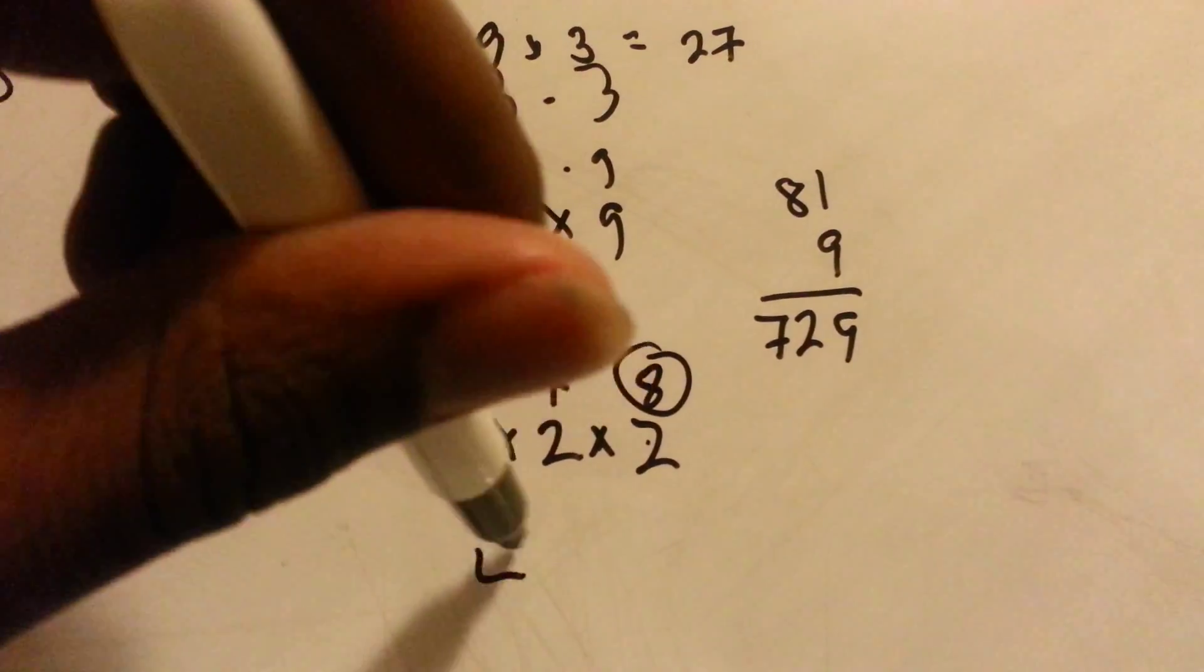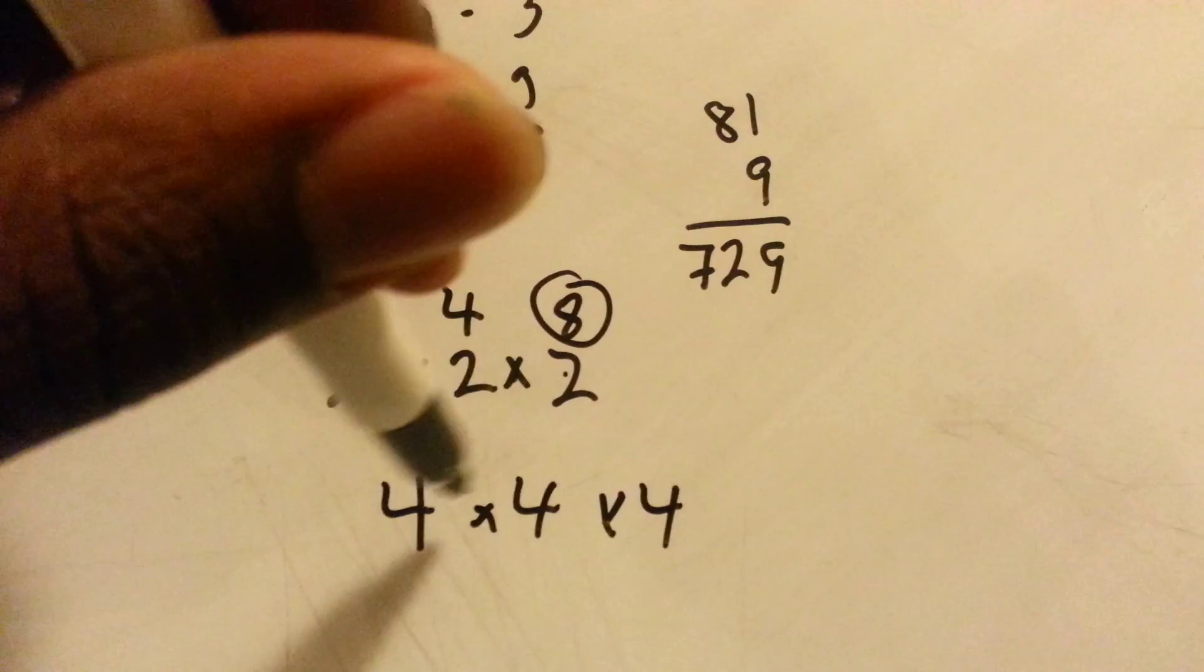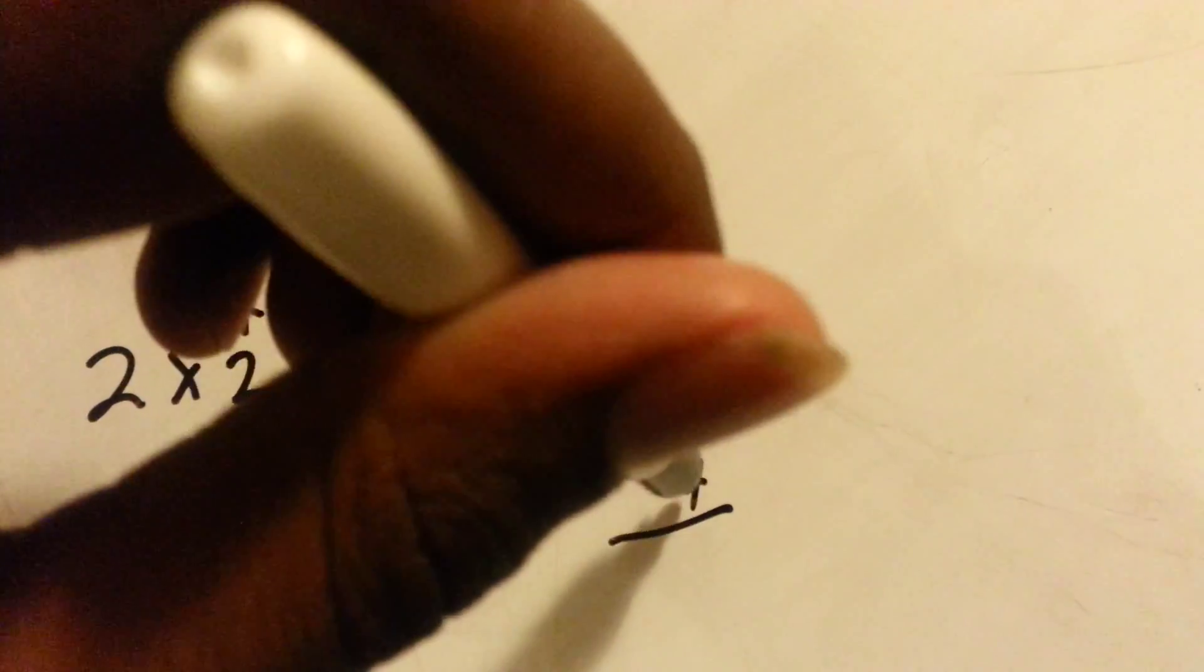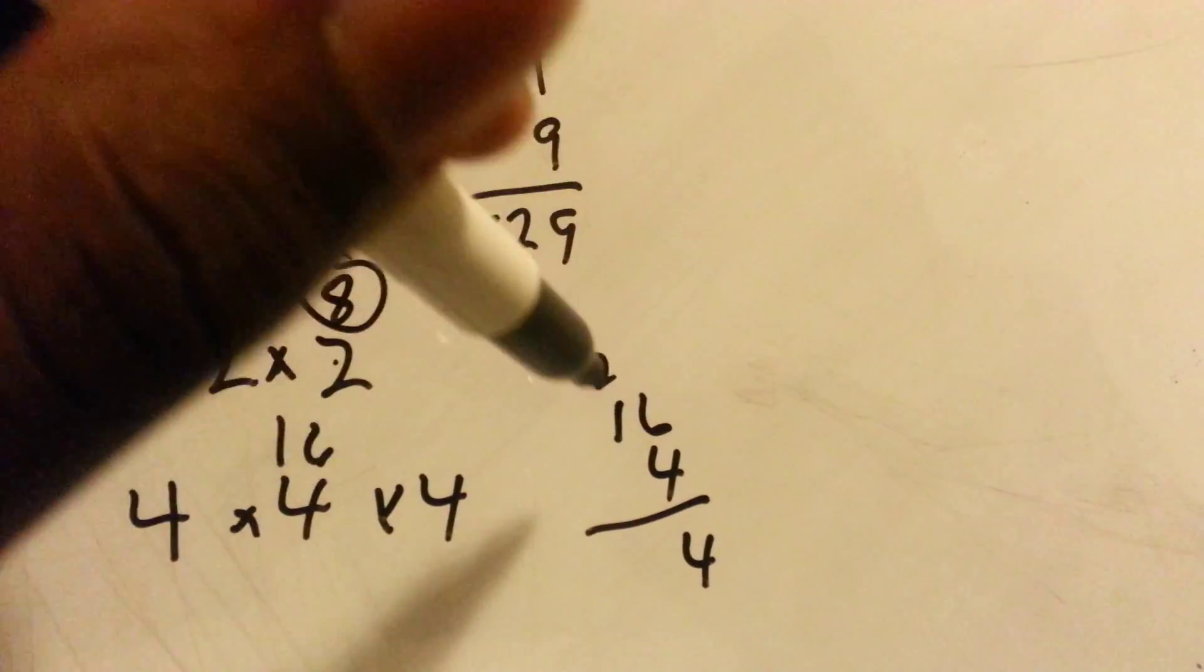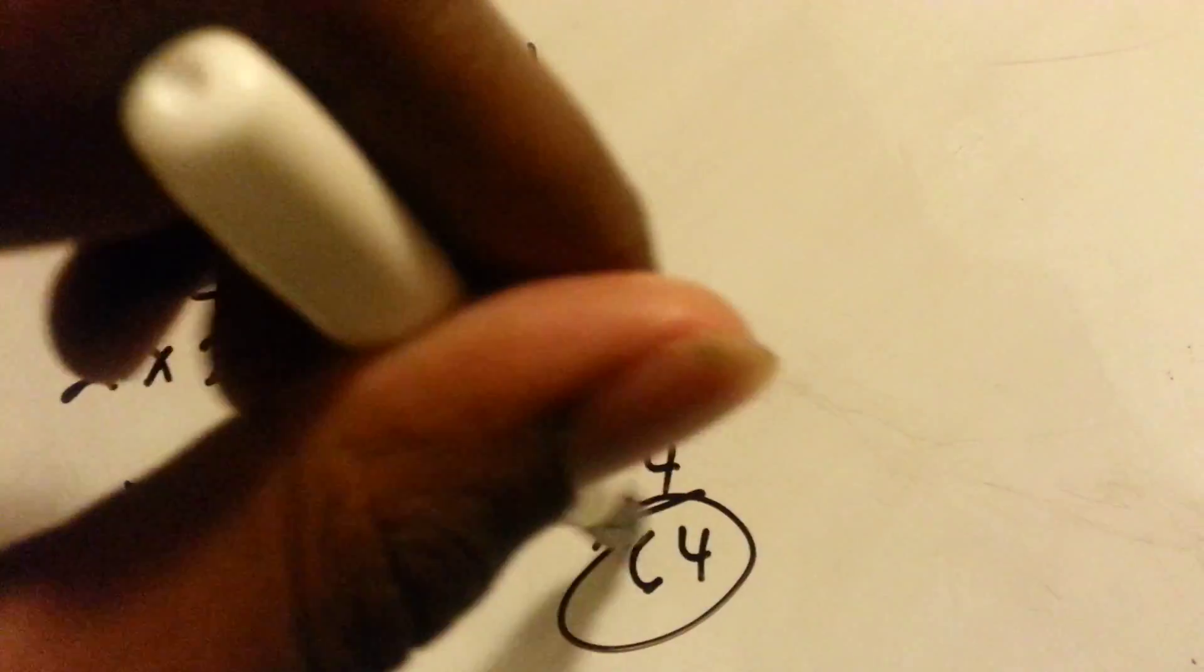So then it leaves with a four. Four times four times four. Four times four is 16. 16 times four is 64. Six times four is 24, plus two. Four times one is four, plus the two is six. 64. So that's the guess and test.